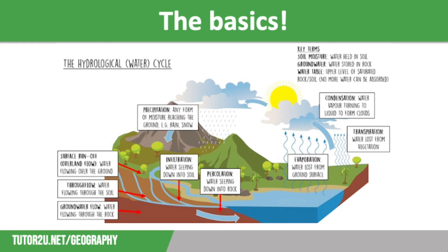We also have throughflow, where water is flowing horizontally through the soil, and groundwater flow, where water is flowing back through the rock. Other key terms you need to know are soil moisture, which is water held in soil; groundwater, which is water stored in the rock; and the water table, which is the upper level of saturated rock and soil. Once that is reached, no more water can be absorbed, so we need to know these key terms to understand flooding.